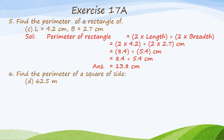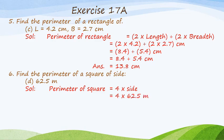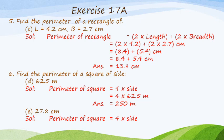Find the perimeter of a square of side 62.5 meters. All sides of a square are equal and the perimeter of a square is equal to 4 multiplied by side, so 4 multiplied by 62.5 meters, which is equal to 250 meters. Now let's do part E of question number 6: the side of the square is 27.8 cm, so the perimeter is 4 multiplied by 27.8 cm, which is equal to 111.2 cm.